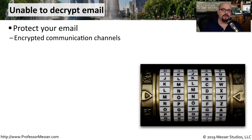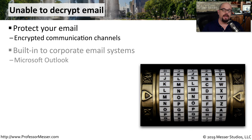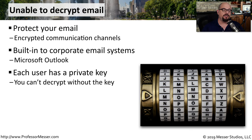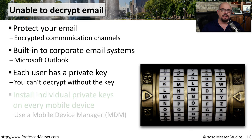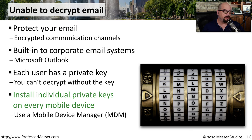We use extensive encryption on our mobile devices to be sure that our information remains safe. If you're using Microsoft Outlook to send and receive emails, all of those communications are encrypted by default. This requires that you have a private key on your mobile device that's able to encrypt and decrypt this information. You can't decrypt these emails unless you have that private key installed. Often, a system administrator will use a mobile device manager, or MDM, to manage all of these mobile devices and install the individual private keys.